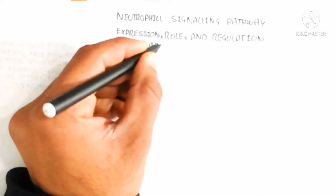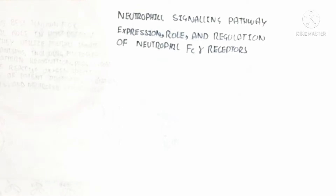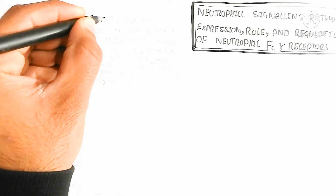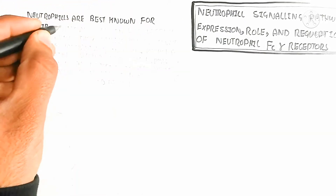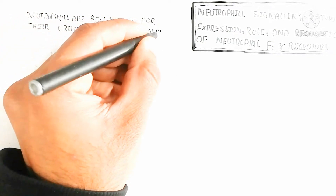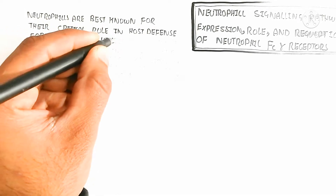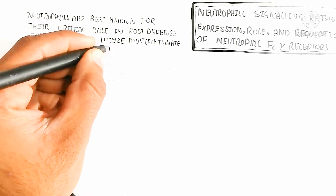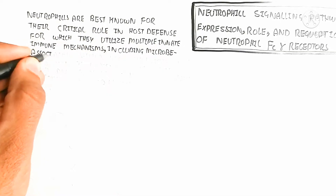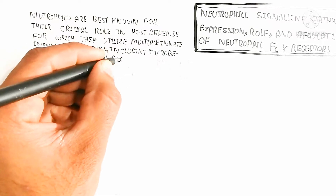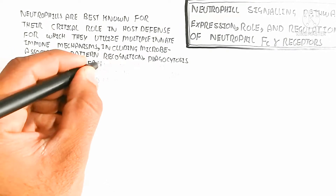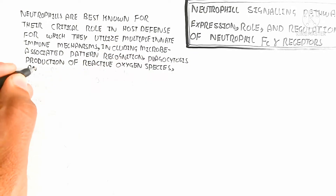The neutrophil is part of the innate immune system. It contains a 3-lobed nucleus with a net-like structure. Neutrophils are best known for their critical role in host defense, utilizing multiple innate immune mechanisms including microbe-associated pattern recognition, phagocytosis — where solid particles move inside the neutrophil — production of reactive oxygen species, release of potent proteases, antimicrobial mediators, and neutrophilic extracellular traps.